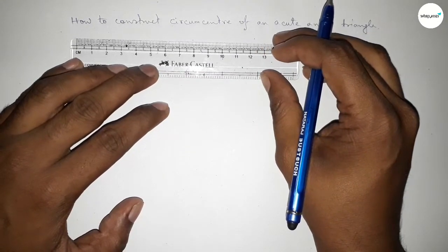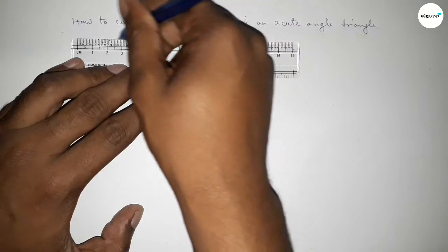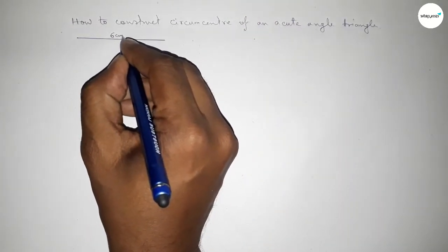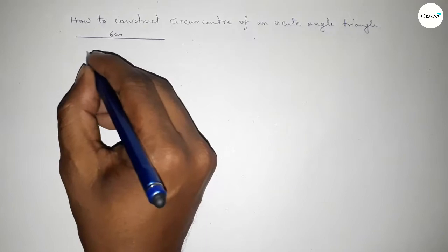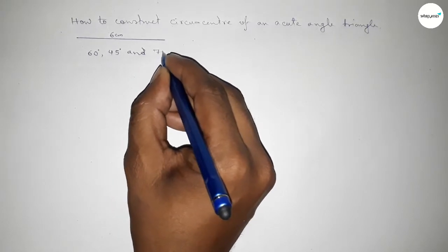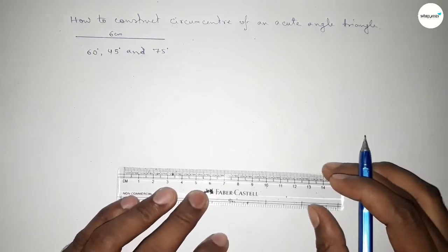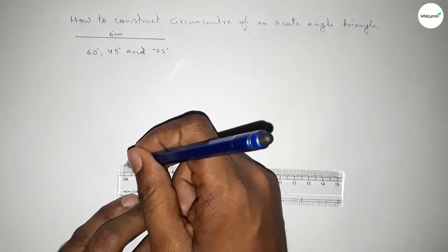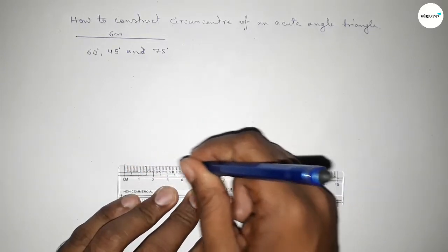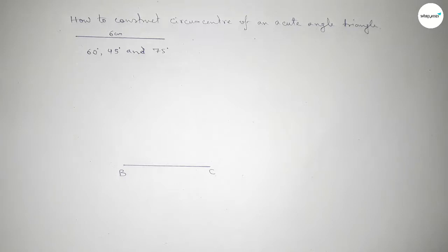First of all, we have to construct an acute angle triangle. We are drawing a line of length six centimeters. Taking three acute angles: 60 degrees, 45 degrees, and 75 degrees — all less than 90 degrees. So first we draw a line of length six centimeters, taking here point B and here point C.